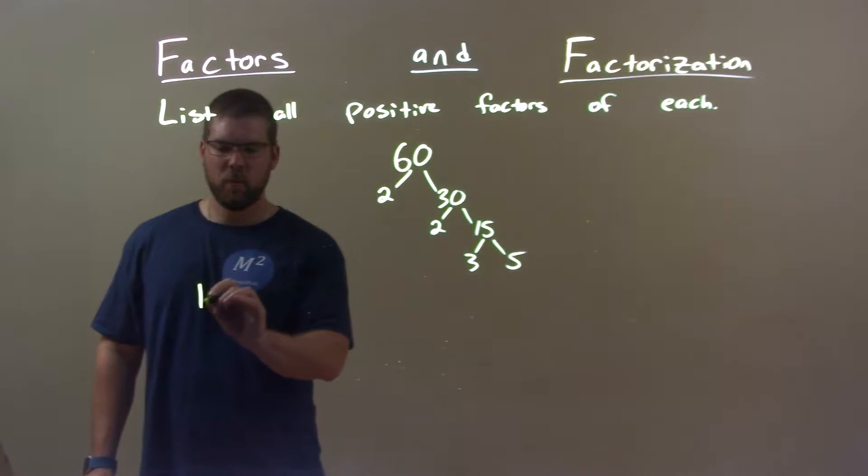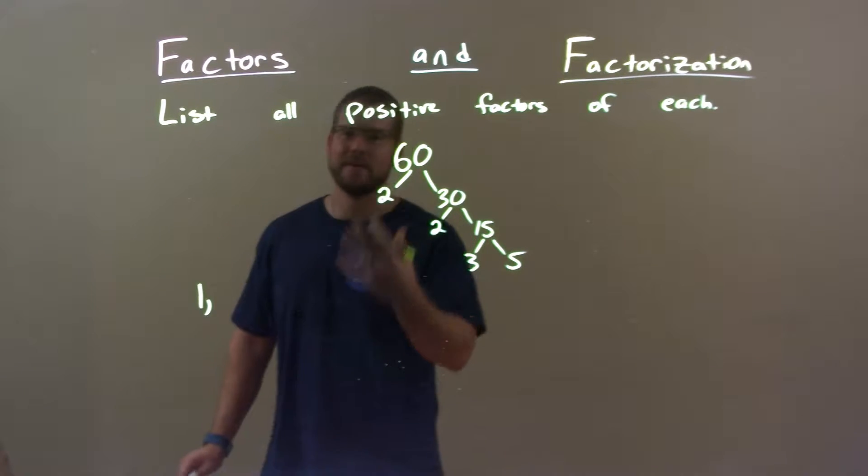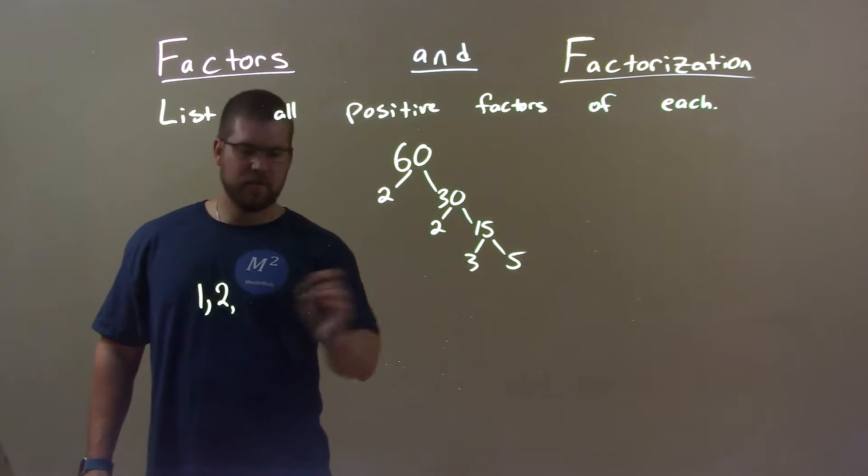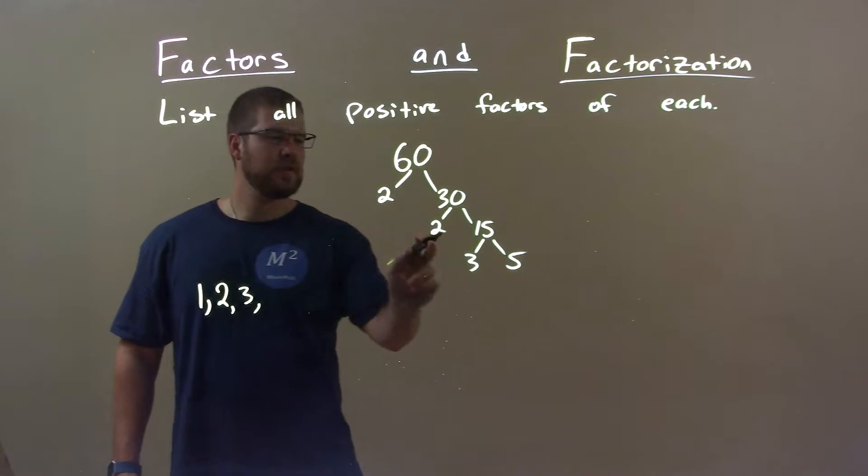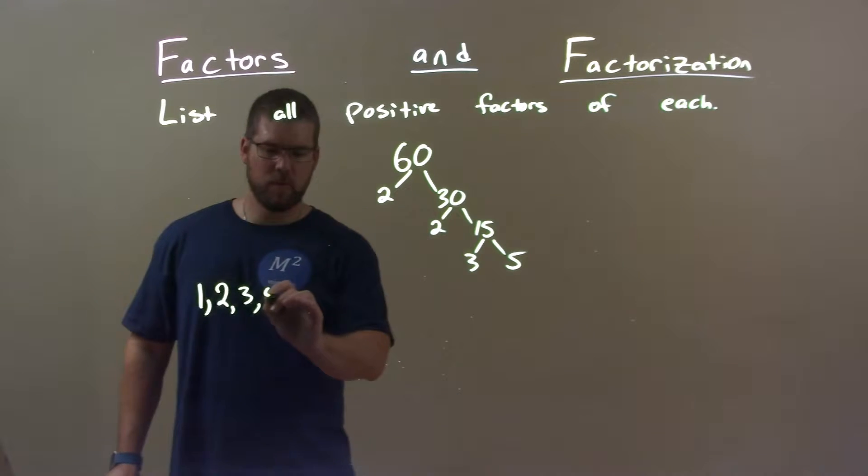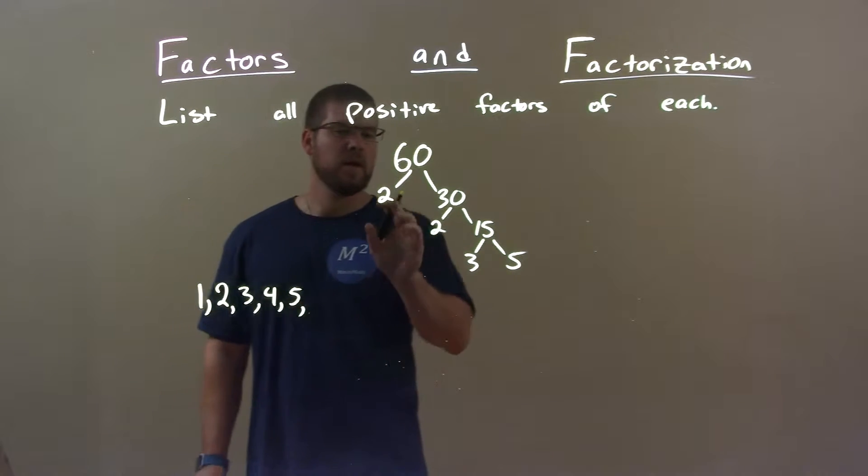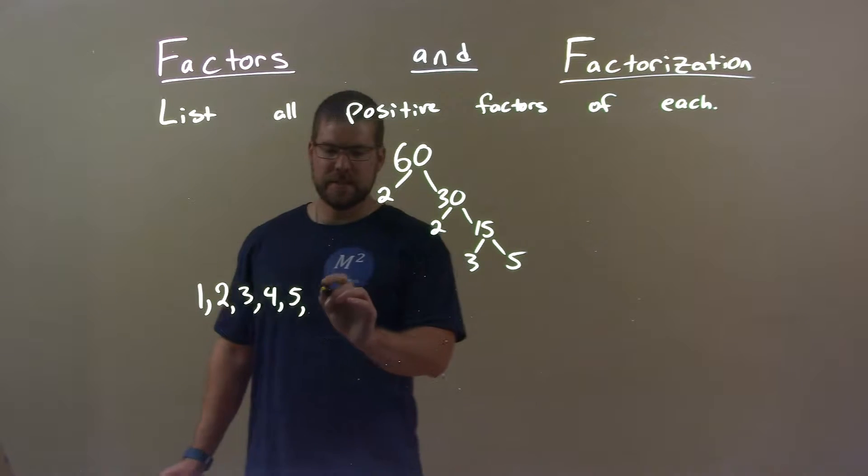1 will always be a positive factor of a number. 2 is one of our prime numbers, and so is 3. Since 2 times 2 is 4, 4 will work. 5 is in our list. 5 also works. 2 times 3 is 6. So 6 works.